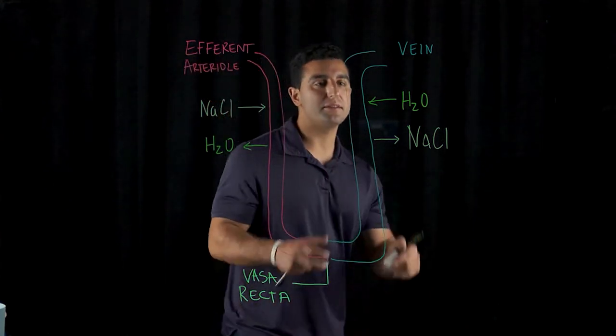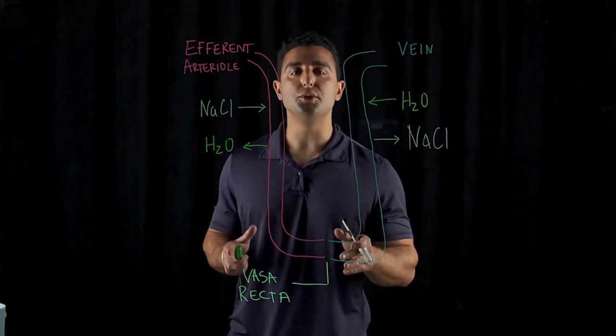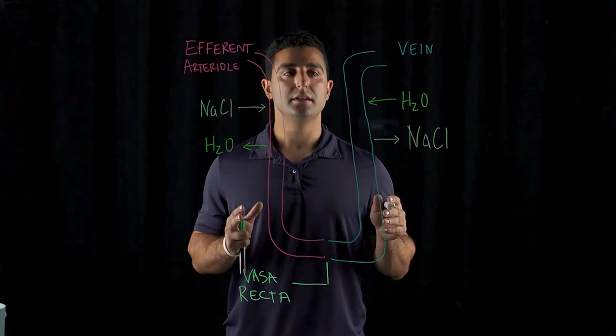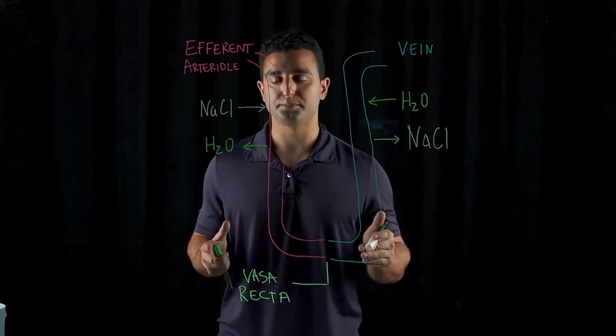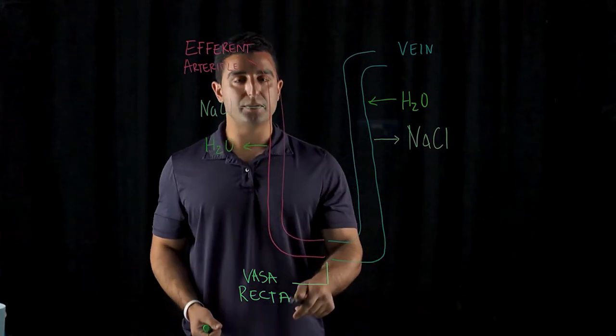So the vasa recta are these flat capillaries that are present in the medulla of the kidneys, so of the nephron. Where we have the cortex, which is the outer side, medulla is the inside. So you have a lot of these vasa recta.